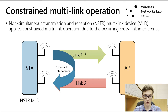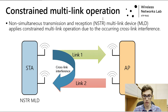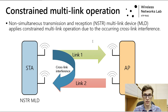However, in some cases — for example, if the links operate in channels close to each other — the multi-link operation may be impaired by cross-link interference. In such cases, it is unable to perform simultaneous transmission and reception, and is hence called a non-simultaneous transmission reception, or NSTR, multi-link device (MLD). This restriction has raised many concerns in discussions in 802.11, and has led to new channel access rules for NSTR devices.